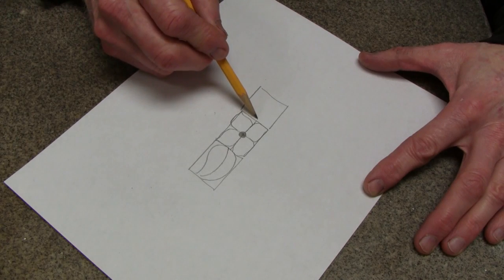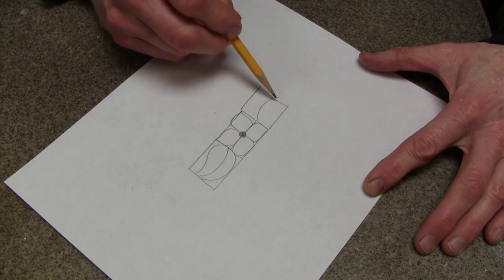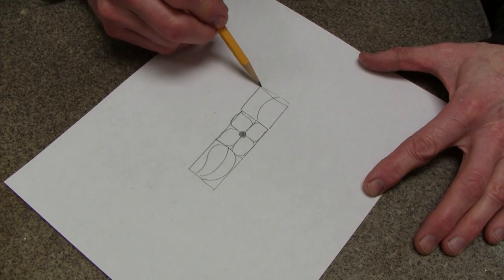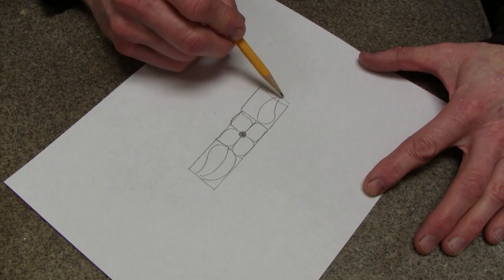This way, you can arch the center of the leaf up. I'm going out just a little bit. My box was a little bit short. Now you can draw a leaf on this side.